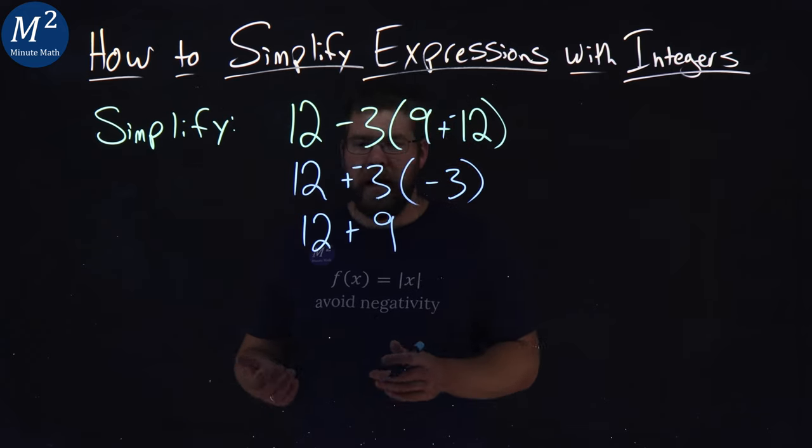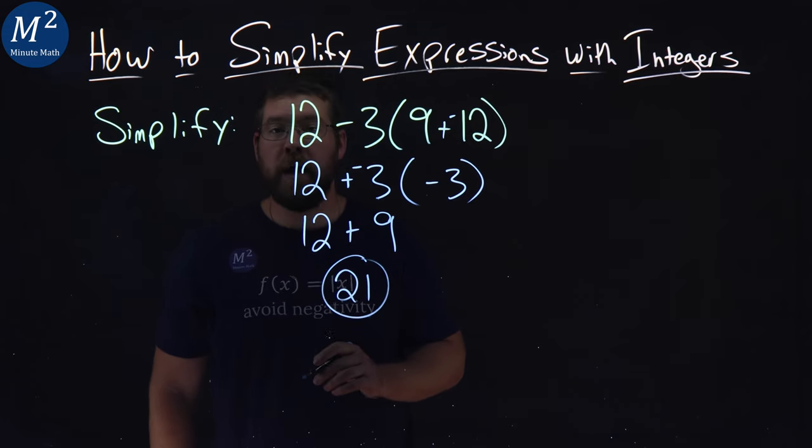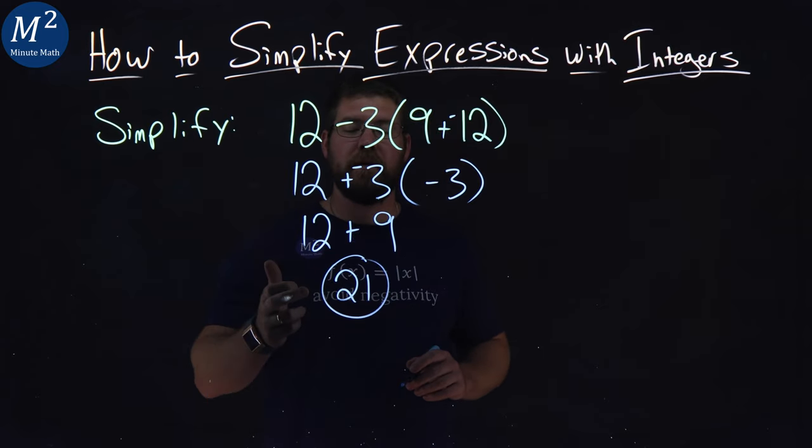Now, we're just adding. 12 plus 9 gives me a good old 21, and there we have it. We took our expression and we simplified it, and we got 21.